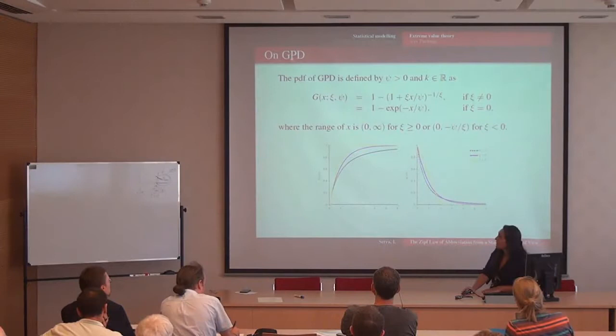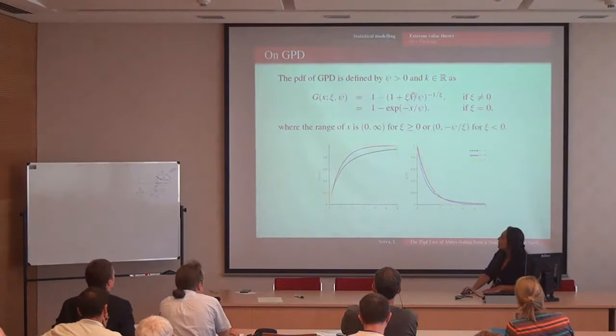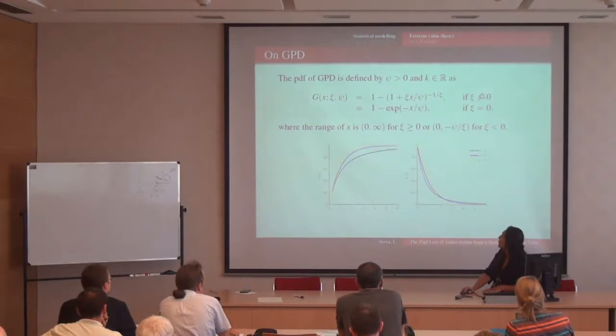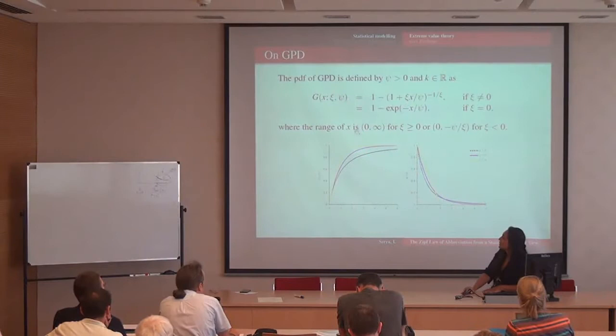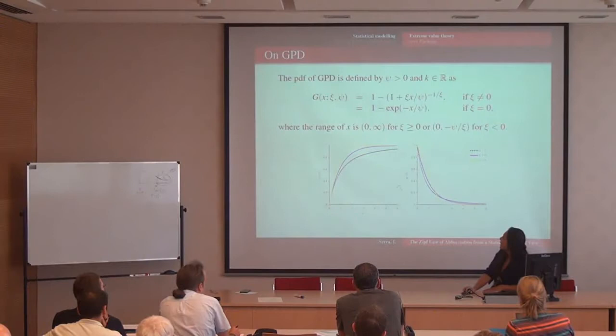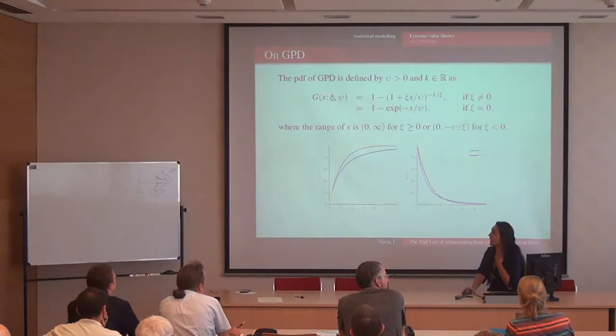Let me show what GPD is. The cumulative distribution function is given by this expression. For chi positive, this is the case close to a power law. But the parameterization is quite different. The first difference is that the support is between zero and infinity — zero is included because this part of the expression equals zero. GPD includes all kinds of tails: not only tails with support zero to infinity, but also tails with compact support. GPD considers all possibilities.